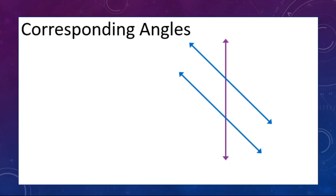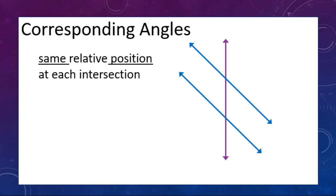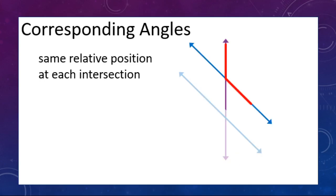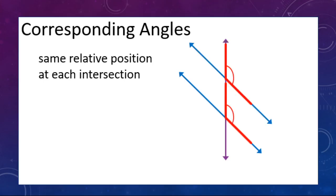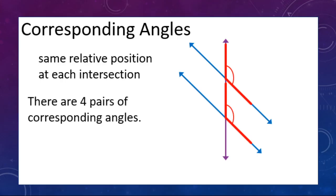Looking at corresponding angles — corresponding angles have the same relative position at each intersection. So we look at an angle at the top intersection and compare it to the bottom intersection to see which one is in the same position. We have four pairs of corresponding angles — one pair points up and left, another pair points down and left, and so on.